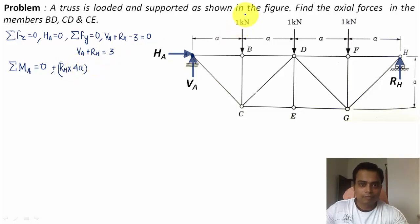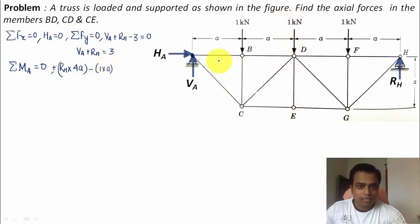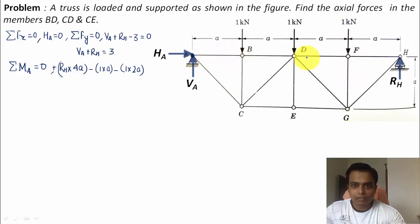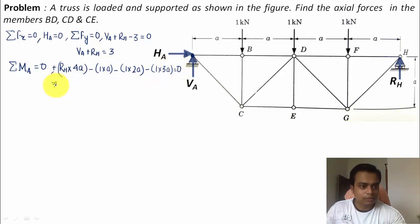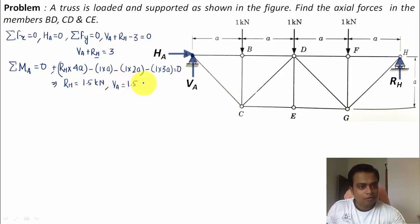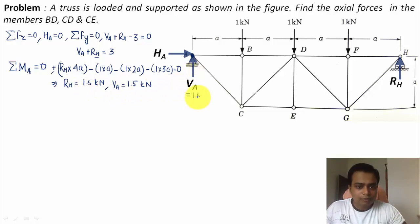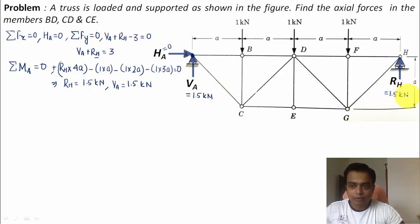Writing the moment equation: RH × 4a − 1×a − 1×2a − 1×3a = 0. Solving this gives RH = 1.5 kN. Substituting back: VA = 3 − 1.5 = 1.5 kN. So VA = 1.5 kN, HA = 0, and RH = 1.5 kN.